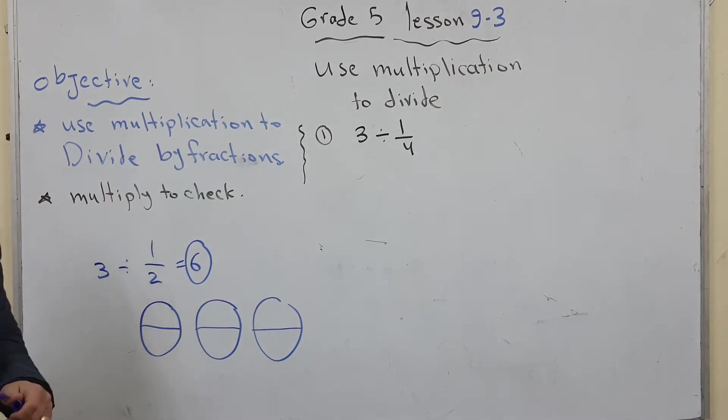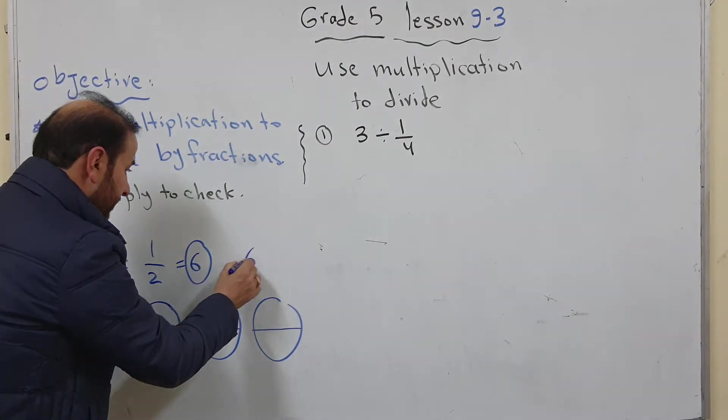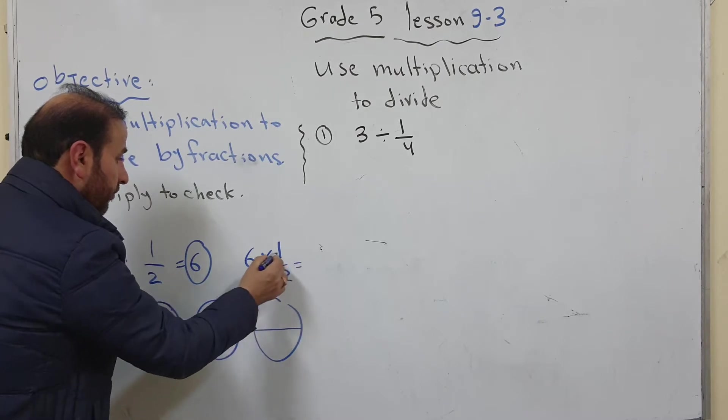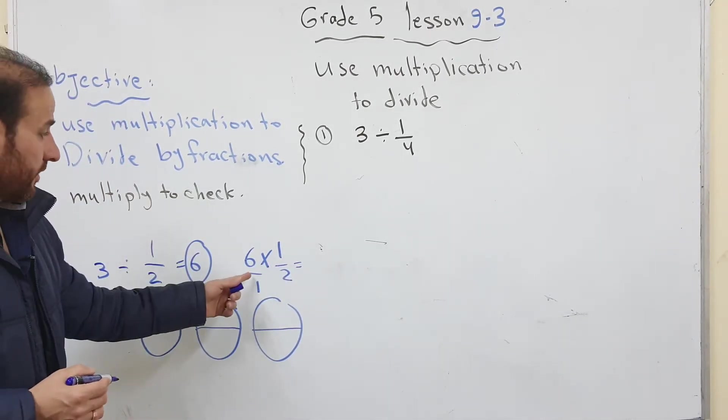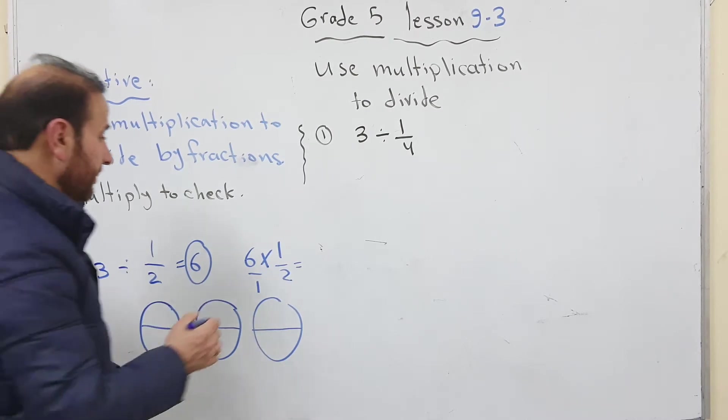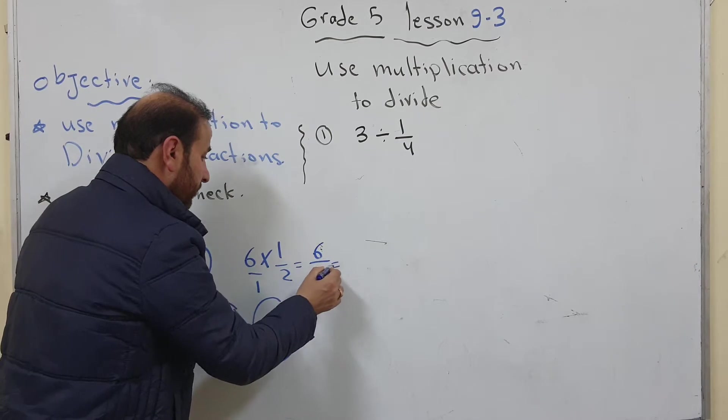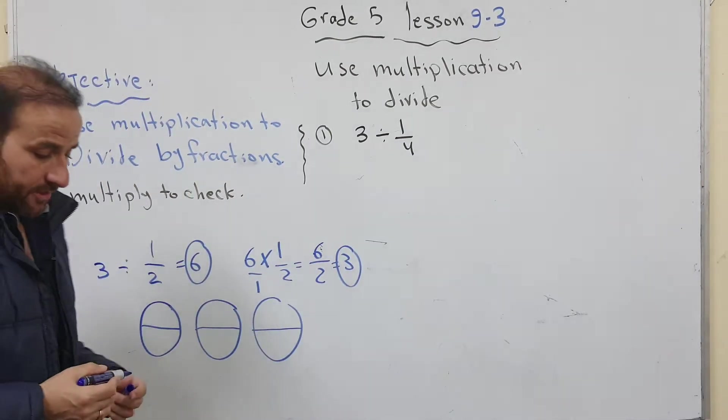Now let me use multiplication to check my answer. 6 multiply 1/2. I put 1 here. Then 1 multiply 6. If you remember how to multiply fractions we multiply 6 by 1 equals 6, and 2 times 1 equals 2. So the answer is 3, it's the same as dividend.